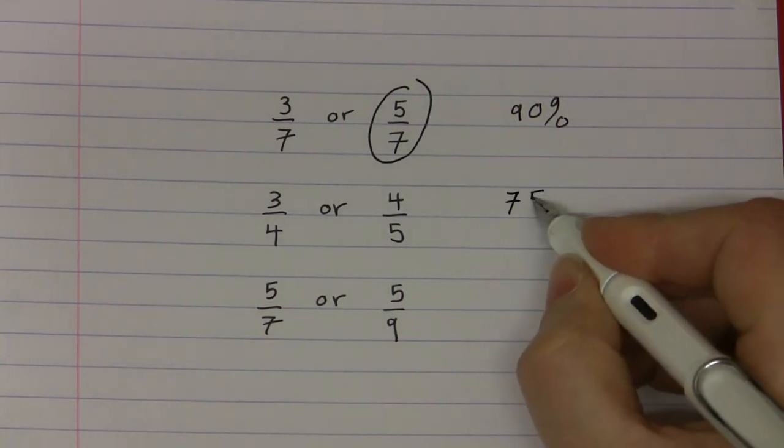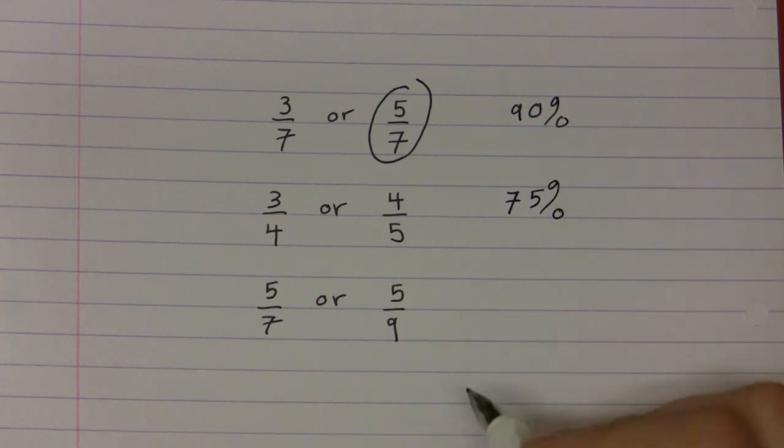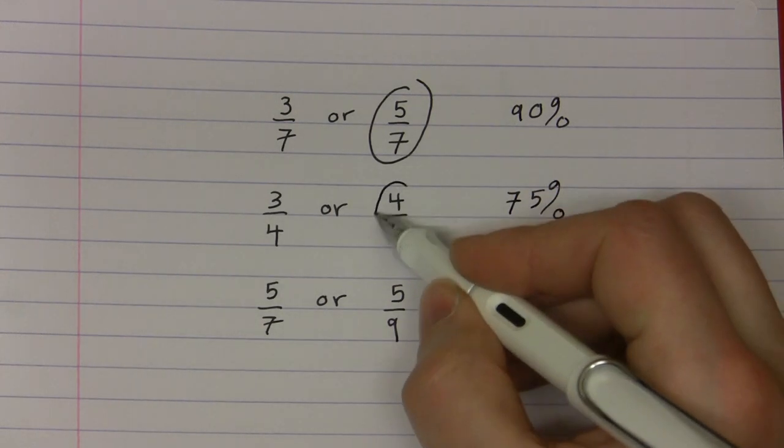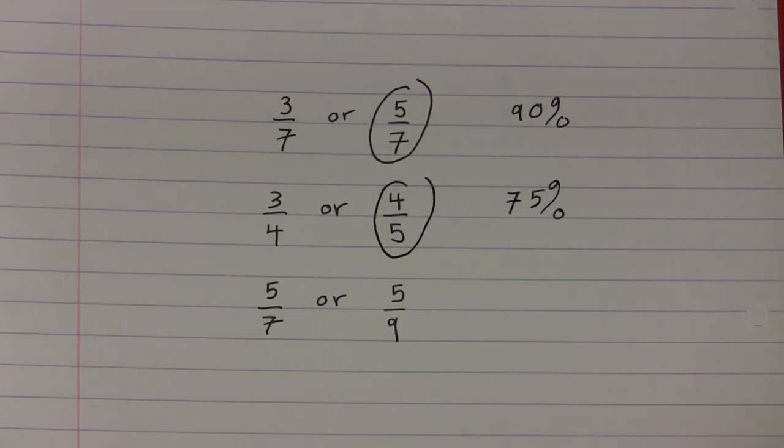75 percent of the responses to the second question were correct. These students correctly stated that 4 fifths is greater than 3 quarters.